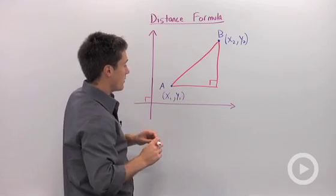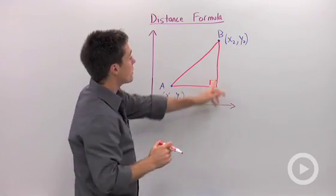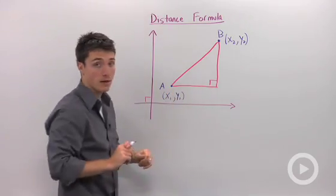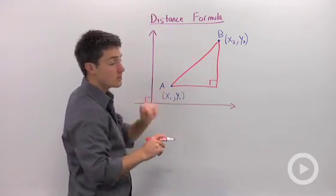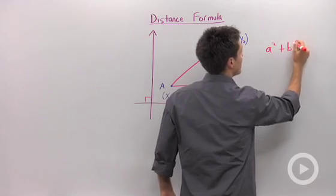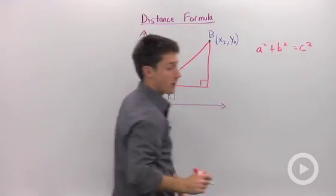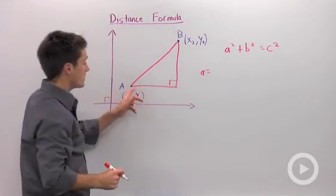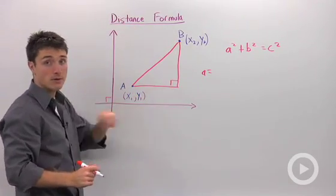If we want to find the distance between A and B, first we need to find the lengths of my legs. The reason why that's important is because we're going to use A squared plus B squared equals C squared. So A is going to be one of my legs, the leg that's parallel to the X-axis.